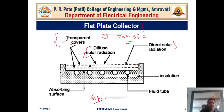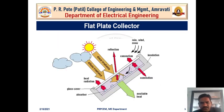Another component is the absorbing surface. There is the absorbing surface, and then the fluid tube — fluid is circulated from one place to another through the fluid passage. Insulation is also provided to avoid heat loss from the system. This is the diagram of the flat plate collector — the glass cover at the top position and the absorber tubes below it.